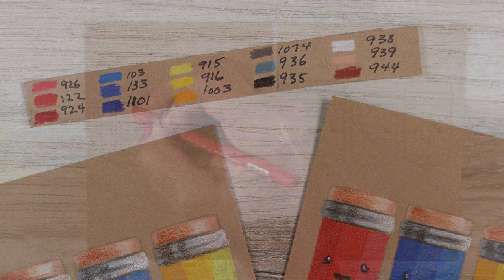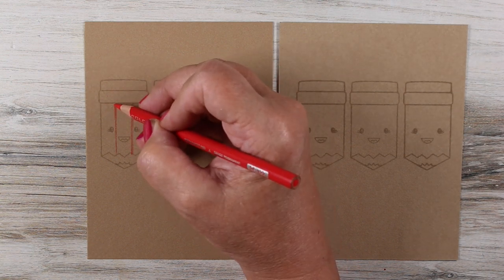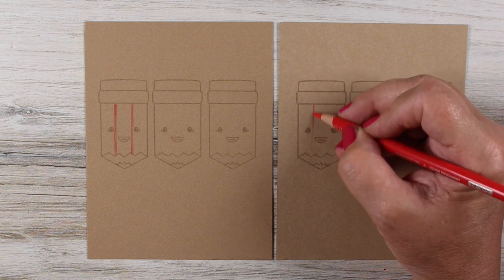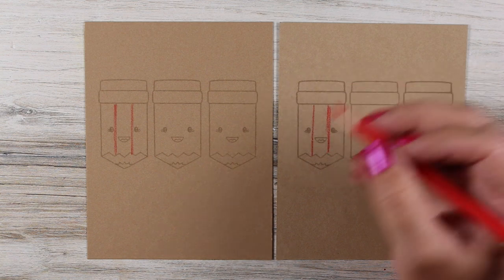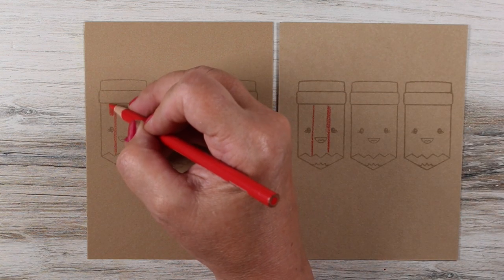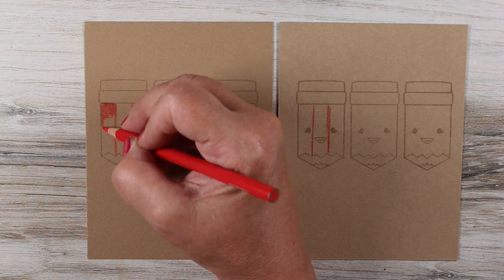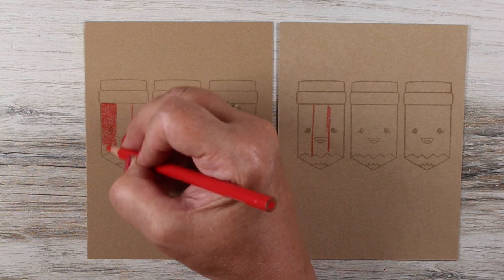These are the colors that I'm using, all Prismacolors for this particular card. What I did was stamp them in some of my favorite things grout gray ink, so that I would get a tone-on-tone look. By the time I finished all my coloring, those lines would really disappear. I'm coloring right over top of them, so it looks like I drew the pencils myself.